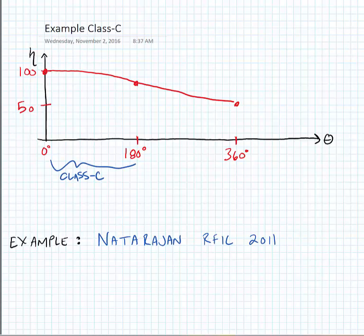So for theta between zero and 180 degrees, that is a Class-C amplifier, and the efficiency will go between 100 and 78.5 percent when it becomes Class-B.